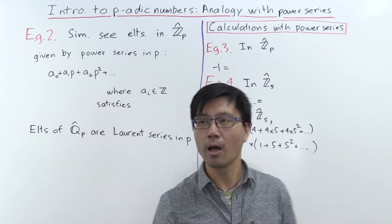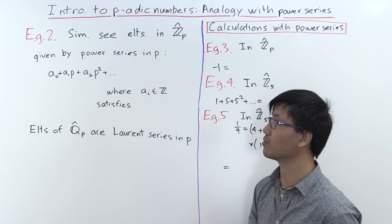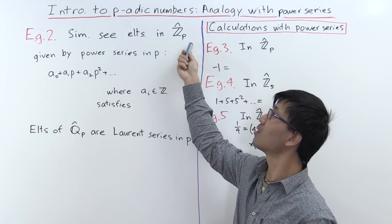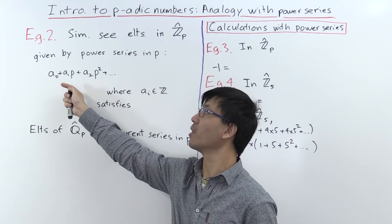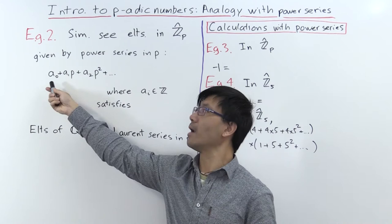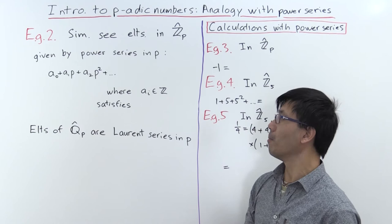For our next example, we want to look at the ring of p-adic integers and view elements there in analogy with power series. Using the same sort of argument, elements in here do indeed look like power series — but now instead of powers of x, since we're looking at the principal ideal generated by p, they are power series in p. So things of the form a₀ + a₁p + a₂p² + ⋯, an infinite series.